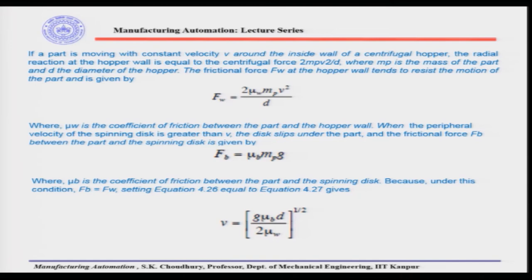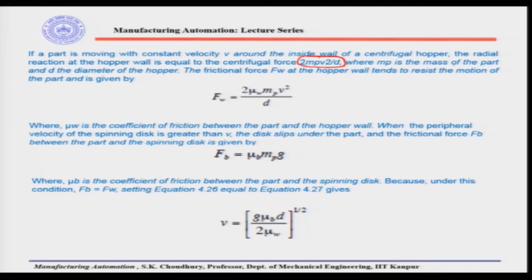If a part is moving with constant velocity V around the inside wall of a centrifugal hopper, the radial reaction at the hopper wall equals the centrifugal force: 2MPV²/d. The frictional force Fw at the hopper wall, which tends to resist the motion of the part, is given by 2μw·MP·V²/d, where MP is the mass of the part, d is the hopper diameter, and μw is the coefficient of friction between the part and the hopper wall.